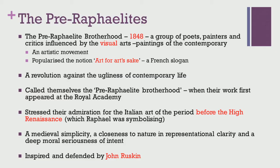In today's session, we take a look at a group of poets known as the Pre-Raphaelites. They were part of a brotherhood known as the Pre-Raphaelite Brotherhood, established in 1848. This consisted of a group of poets, painters, and critics influenced by the visual arts.